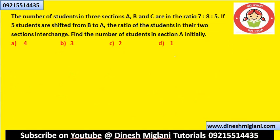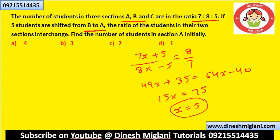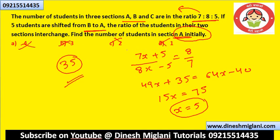The number of students in three sections A, B, C is in ratio 7:8:5. If 5 students are shifted from B to A, the ratio of A and B becomes 8:7. Setting up the equation: (7x+5)/(8x−5) = 8/7, which gives 49x+35 = 64x−40, so 15x = 75 and x = 5. Number of students in section A initially is 7x = 35. The answer is 35.